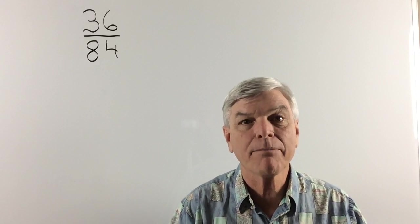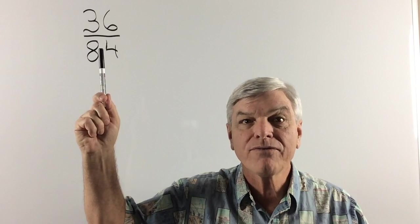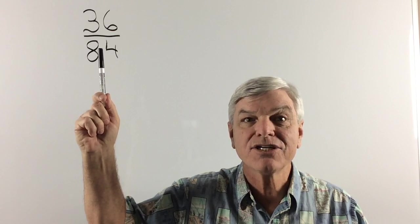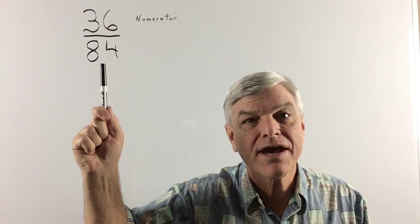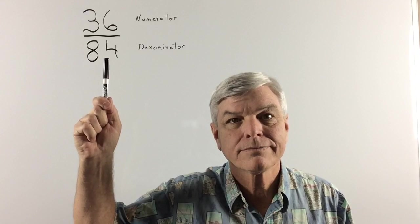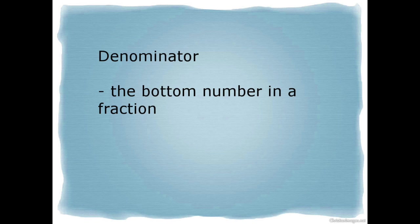Now I said that the top number is 36. Really, what we refer to the top number as is the numerator. And the bottom number is called the denominator. The numerator is the top number in a fraction. The denominator is the bottom number in a fraction.